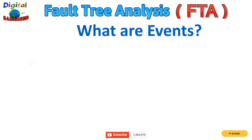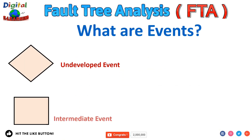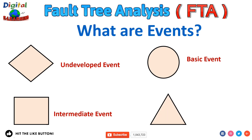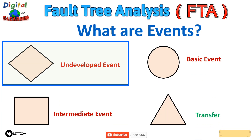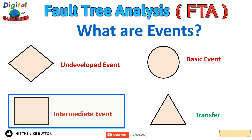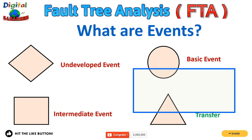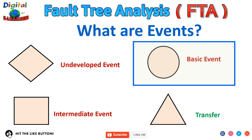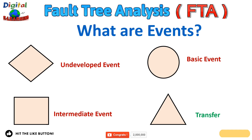What are events? We will look at the undeveloped event, the intermediate event, the basic event, and transfers. The undeveloped event is an event where there is no scope of developing it further — it could be because of economic considerations or there is not much information available downstream. Intermediate events occur between the top event and the basic events. Basic events are the lowermost events that cannot be further developed. Transfer gates are used to signify the continuation of a tree on a separate sheet — just for ease of representation.